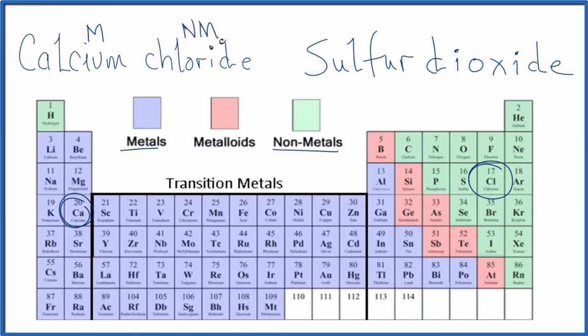So we have a metal and a nonmetal. And when we have a metal and a nonmetal, we have an ionic compound. And with ionic compounds, we have to think about the charge on the ions.